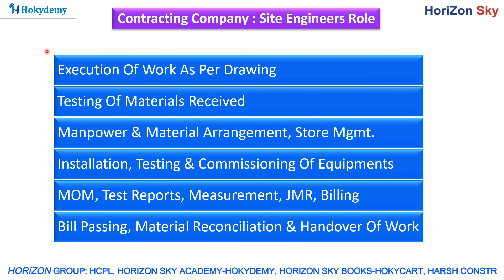The contracting company site engineer's posting is done mainly on site, coordinating with their project coordinator or project manager depending on the type of project. Their first and foremost responsibility is execution of the work as per drawing — whether civil, mechanical, or electrical — as per the given technical specifications and government norms.